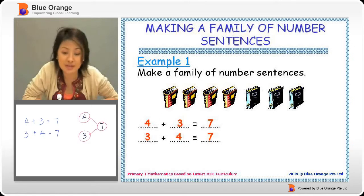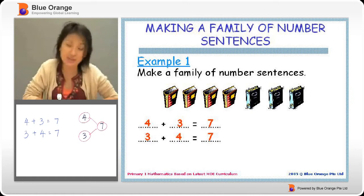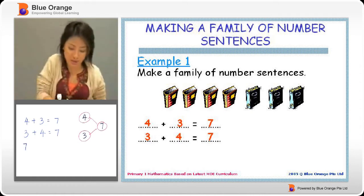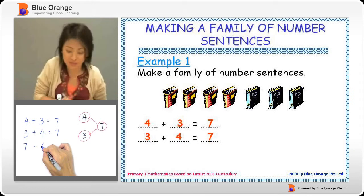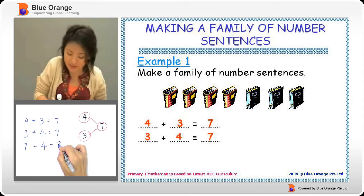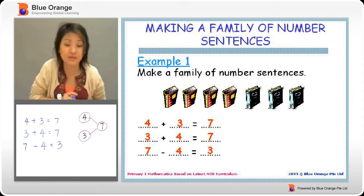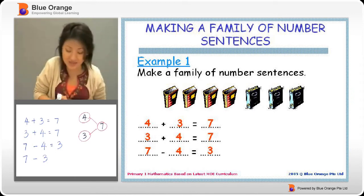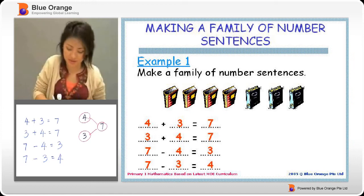Then after that, we will have to move on to subtraction. Subtraction is about using the big number, which is the whole. In this case, whole is seven. Seven, take away one of the small numbers, gives us three. Again, seven, take away the other small number, gives us four.